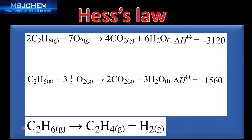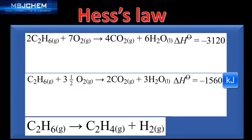Our final equation has one mole of ethane on the left hand side, so we divide this equation by two to give us three and a half moles of oxygen, two moles of carbon dioxide, three moles of water, and one mole of ethane. Because I've halved all the coefficients, I also halve the enthalpy change, giving negative 1,560 kilojoules.